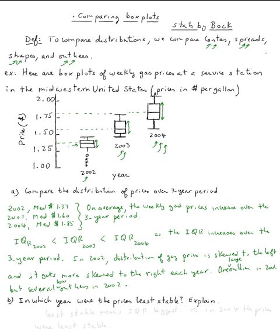Next question is, in which year were the prices least stable? Remember, more stable means the IQR is smallest.